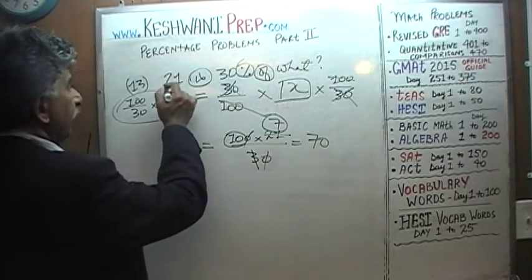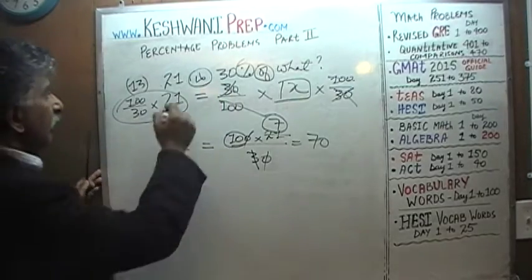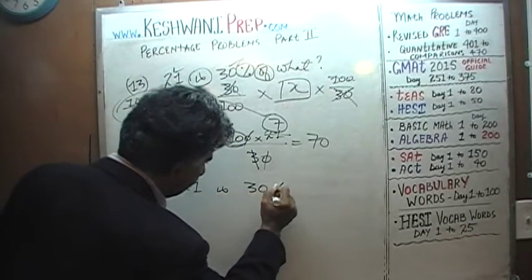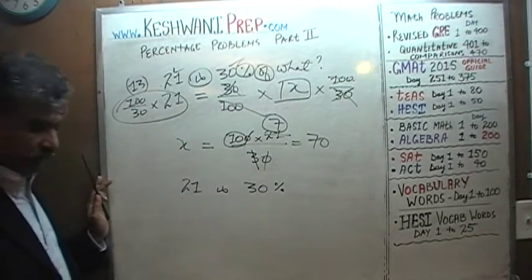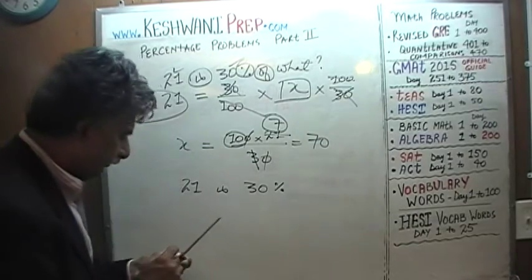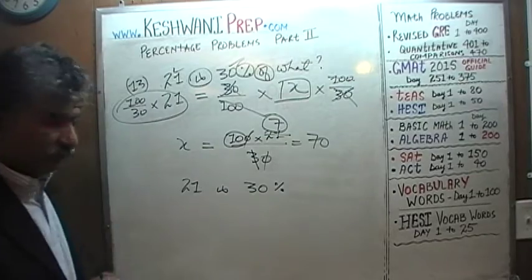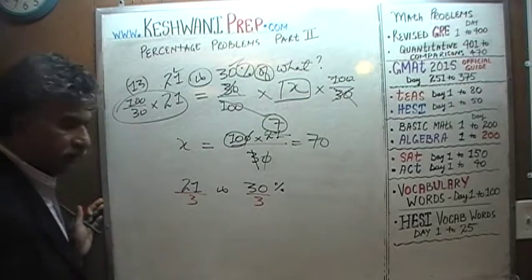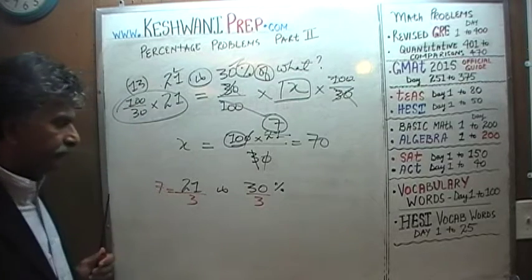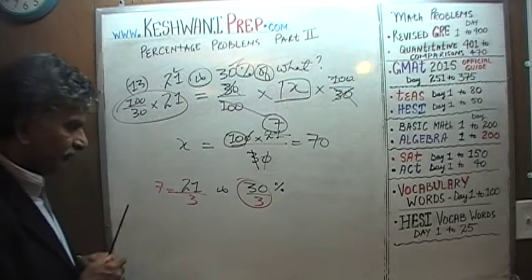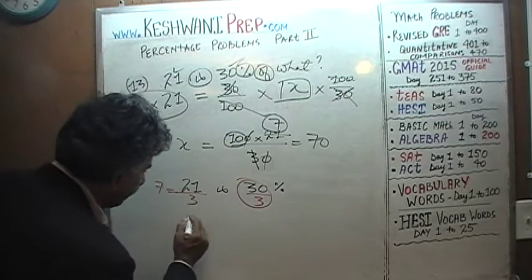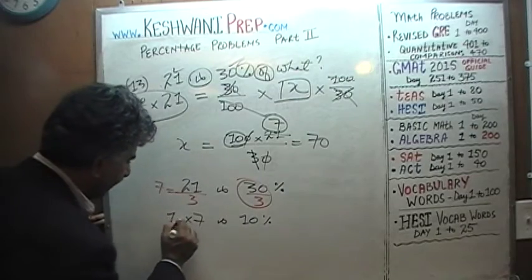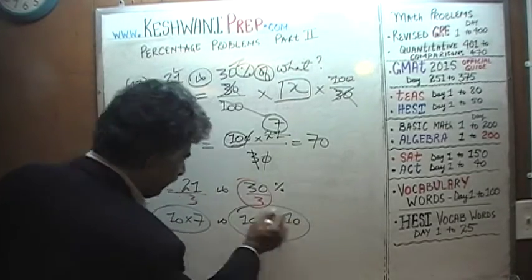Another approach: we're told 21 is 30%. If 21 is 30%, then 10% must be a third of it — divide 21 by 3 to get 7. So 10% equals 7. If 7 is 10%, then the whole amount must be 10 times as much, so 100% is 70.